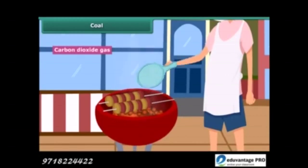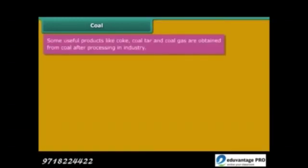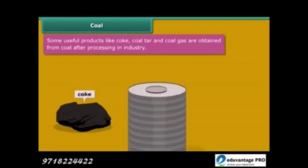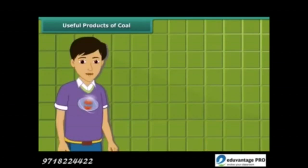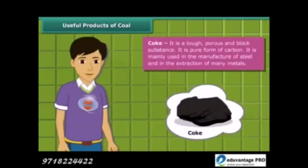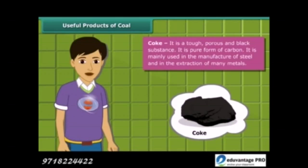You will be surprised to know that some useful by-products of coal — like coke, coal tar and coal gas — are obtained directly from coal. Coke is a tough, porous and black colored substance. It is mainly used in the manufacturing of steel and extraction of many metals.